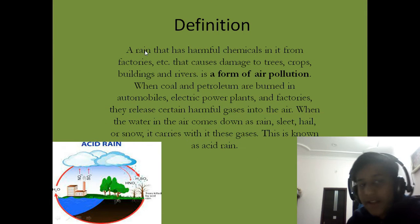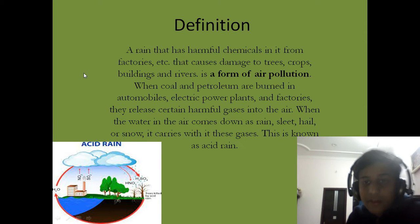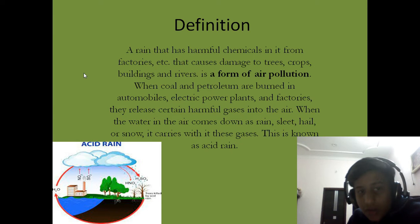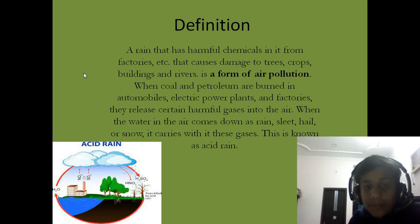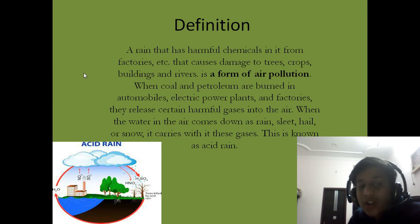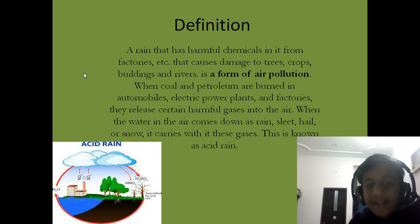What is the definition of acid rain? A rain that has harmful chemicals in it from factories that cause damage to trees, crops, buildings and rivers is a form of air pollution. When coal and petroleum are burned in automobiles, electric power plants and factories, they release certain harmful gases into the air. When the water in the air comes down as rain, sleet, hail or snow, it carries with it these gases — this is known as acid rain.